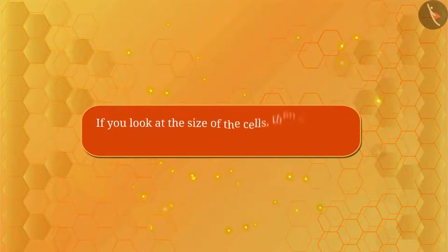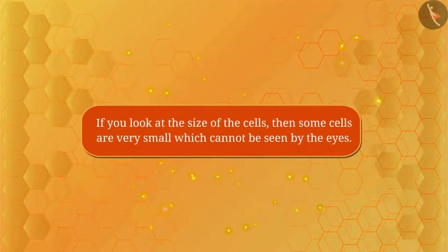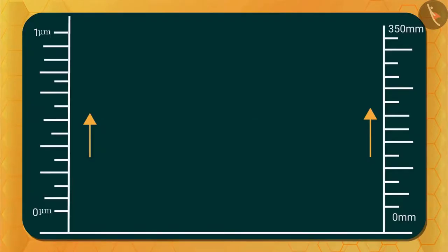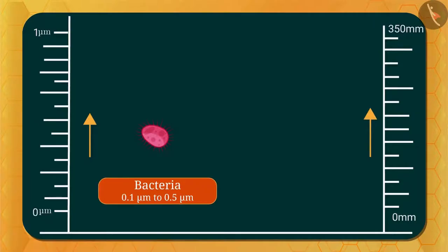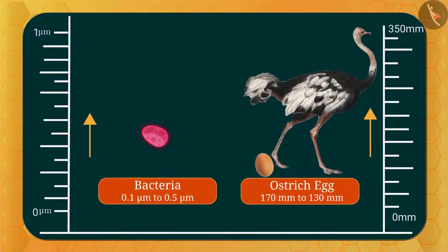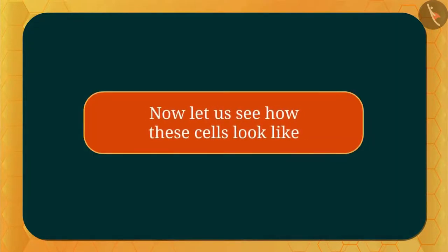If you look at the size of cells, some cells are very small and cannot be seen with the naked eye, such as bacteria, which are about 0.1 to 0.5 microns in size. The largest cell is the ostrich egg, with a size of 170 mm by 130 mm. There are many types of cells!